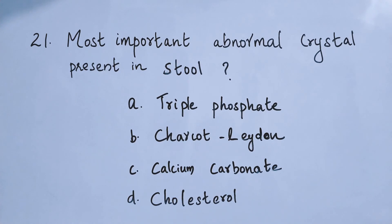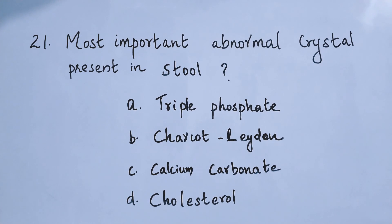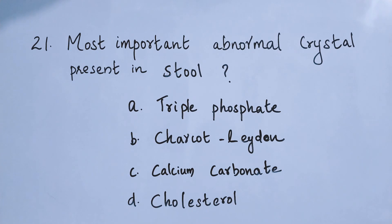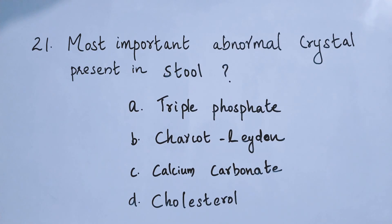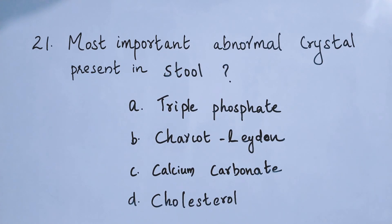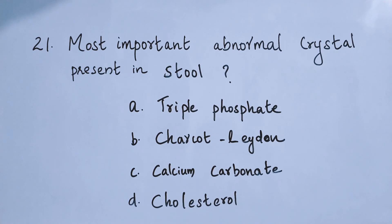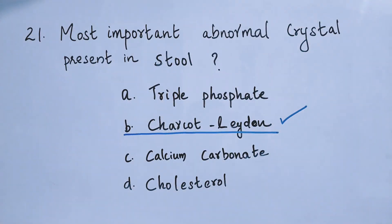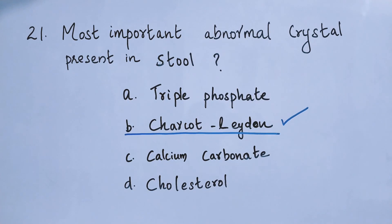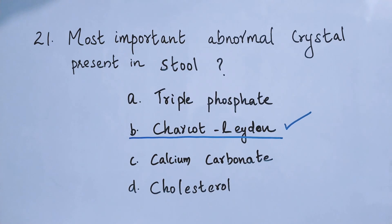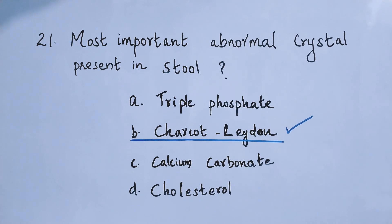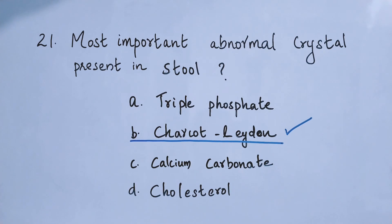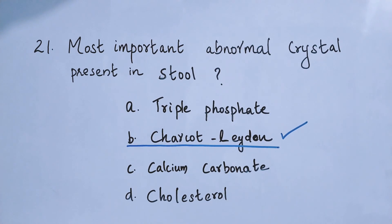Question number 21: Most important abnormal crystal present in stool. Option A: triple phosphate. Option B: Charcot-Leyden crystals. Option C: calcium carbonate. Option D: cholesterol. The right answer is option B, Charcot-Leyden crystals — the most important abnormal crystal present in stool.